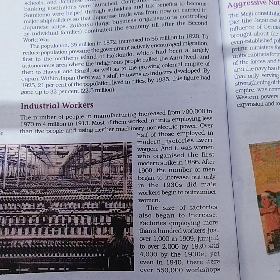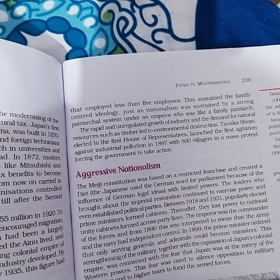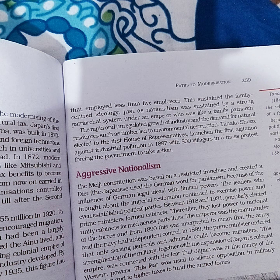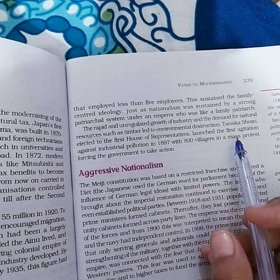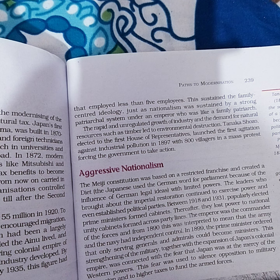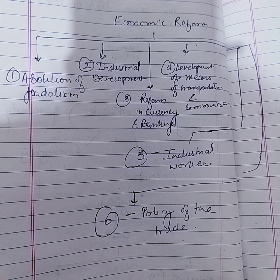The numbers of factories employing fewer than five employees was over 50,000. This helped sustain the family-centered ideology, just as nationalism was sustained by a strong patriarchal system under an Emperor who was like the head of a family. The rapid and unregulated growth of industry and exploitation of natural resources led to environmental destruction. The first agitation against industrial pollution was started by Tanaka Shozo, elected to the first House of Representatives in 1897, who started a program of mass protest across 800 villages, forcing the government to take action.